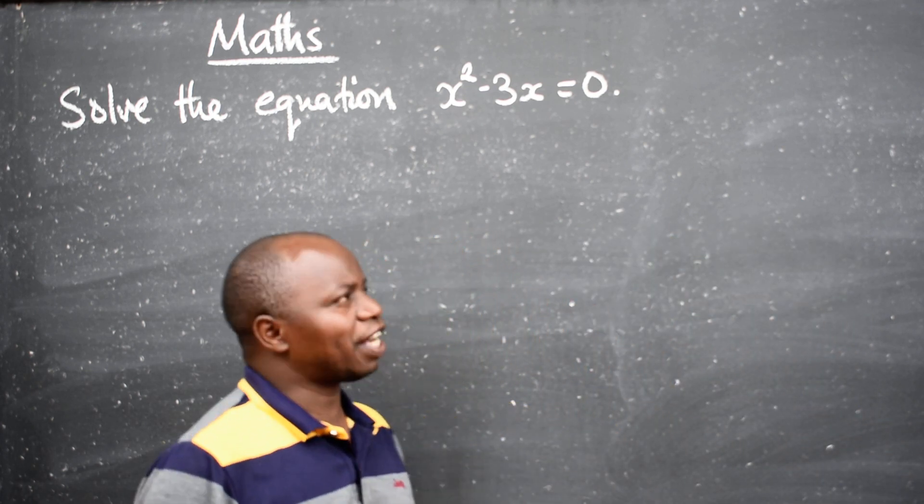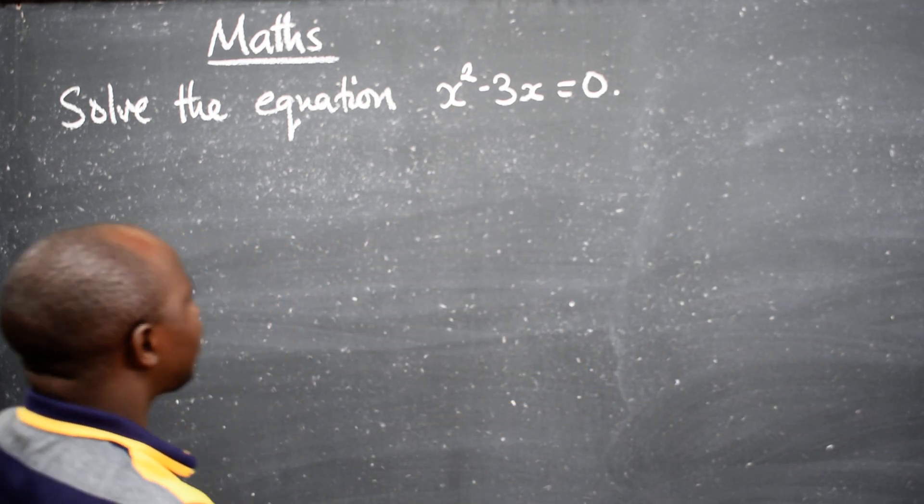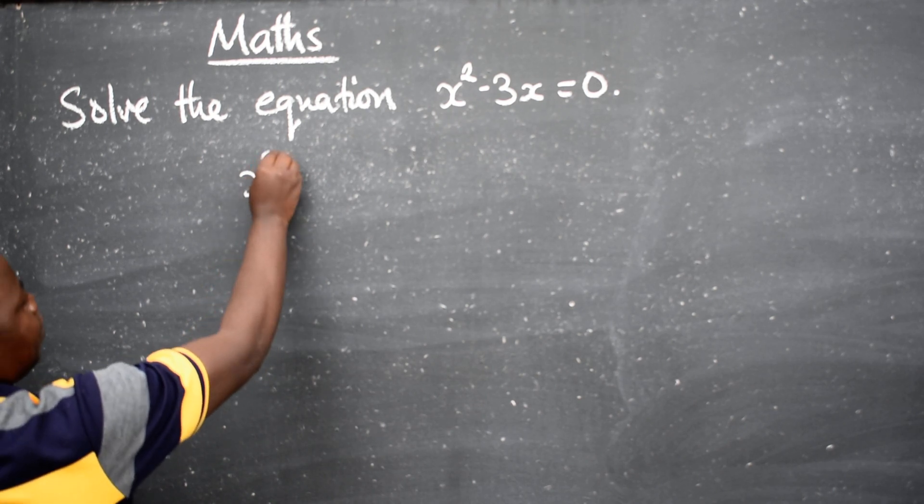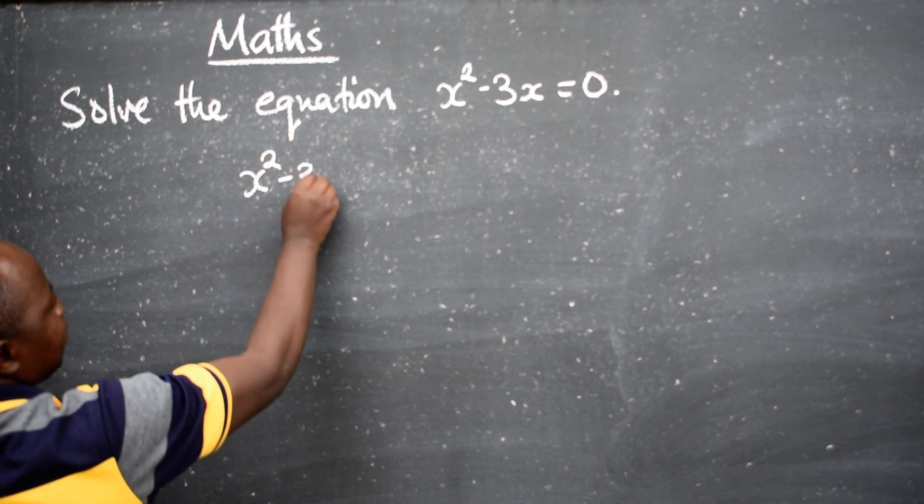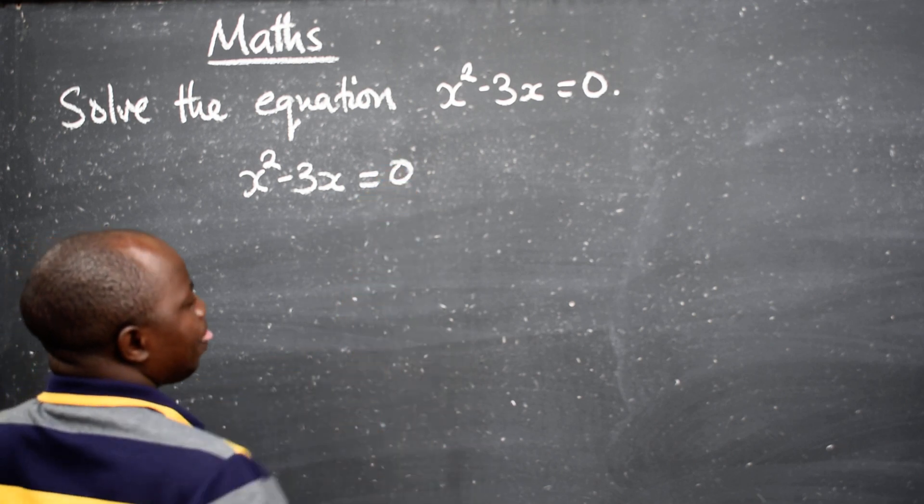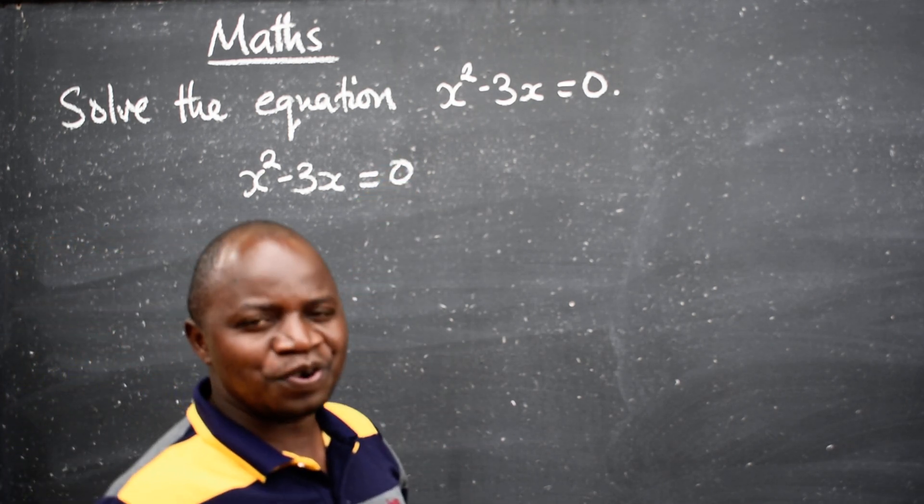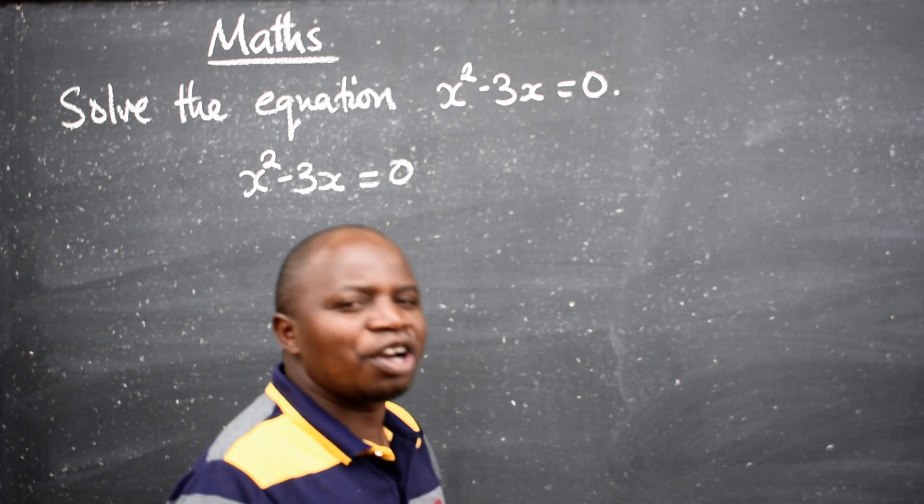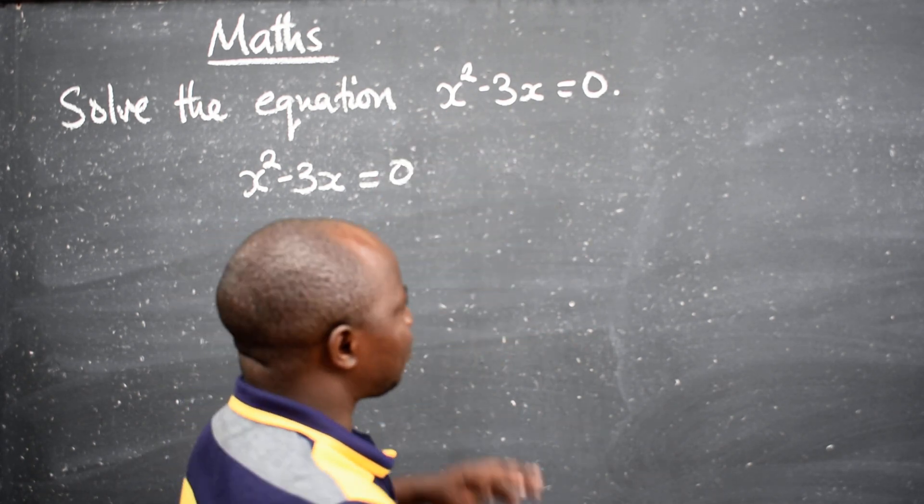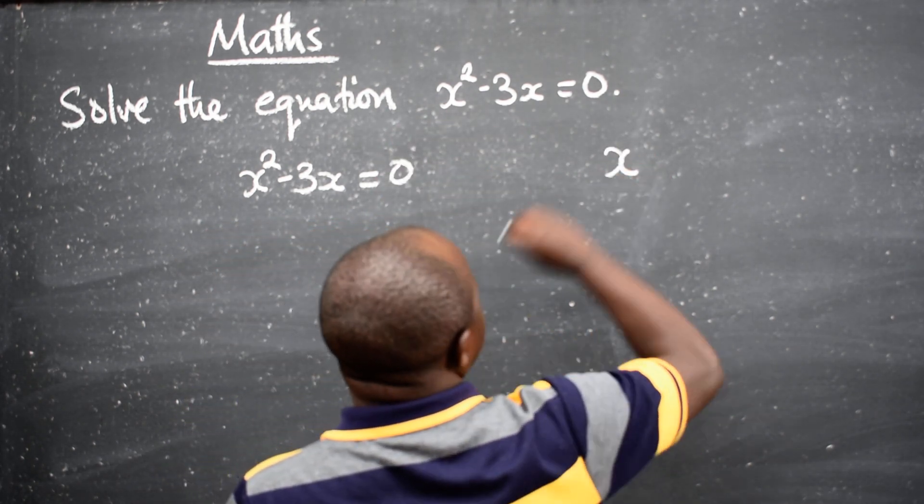So we are expecting two values of x. We are going to copy x squared minus 3x is equal to zero. But I am sure you are used to the quadratic equation that is expressed especially in this form.